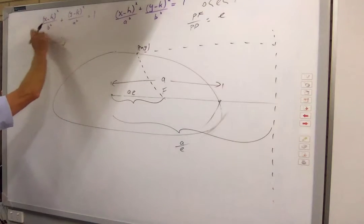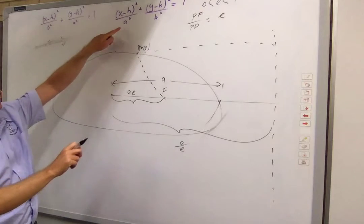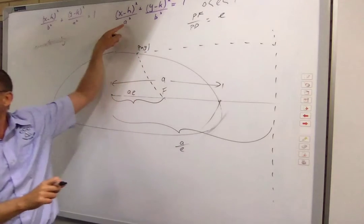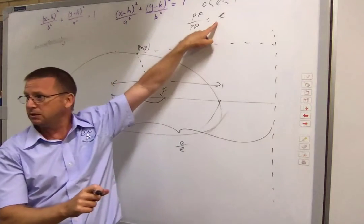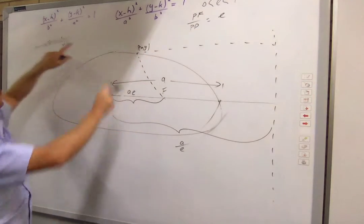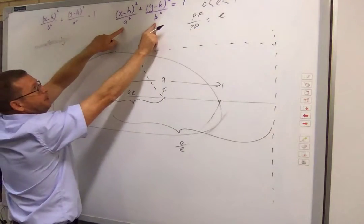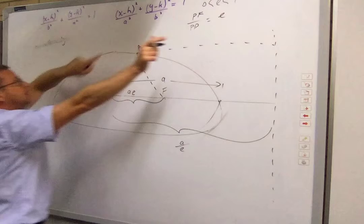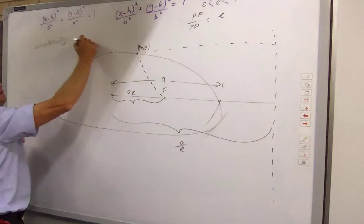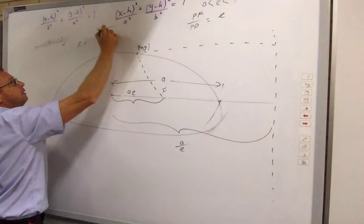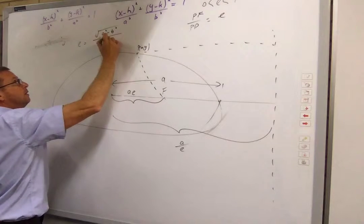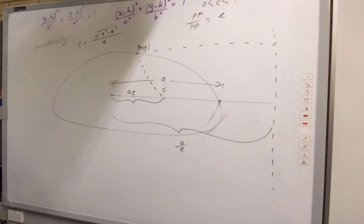Well there's a rule. These A's and B's, they sort of determine the shape. So there's a link between this A and the B and the E. And we get E equals the square root of A squared minus B squared over A. So that's a rule. Yes, you need to remember it.